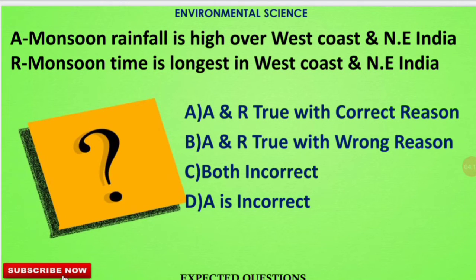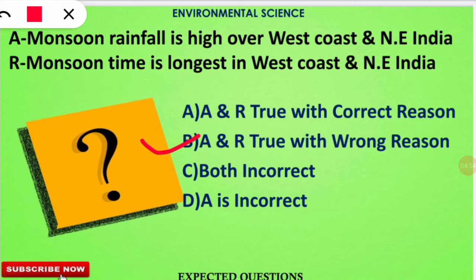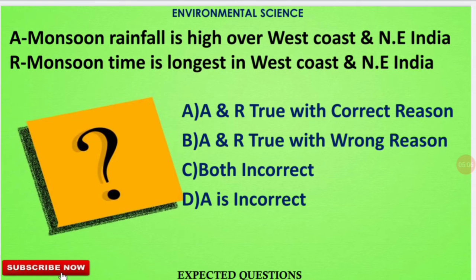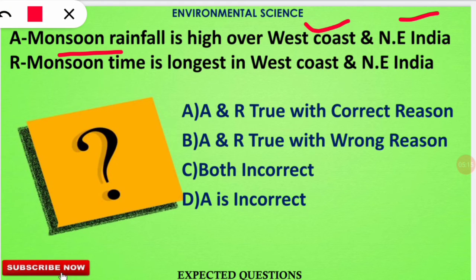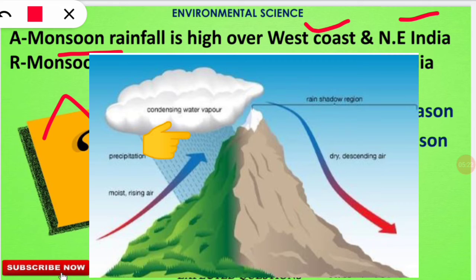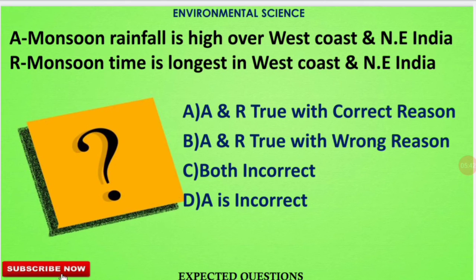This is an assertion and reasoning type question. The assertion states: monsoon rainfall is high over the west coast and northeast part of India. The reason given is: monsoon time is longest in the west coast and northeast part of India. The correct option is B — both statements are true, but the reason is not the correct explanation of the assertion. Monsoon rainfall is high there due to the presence of the Western Ghats and the Himalayas in the northeast; when monsoon winds strike these ranges, they condense and precipitate.